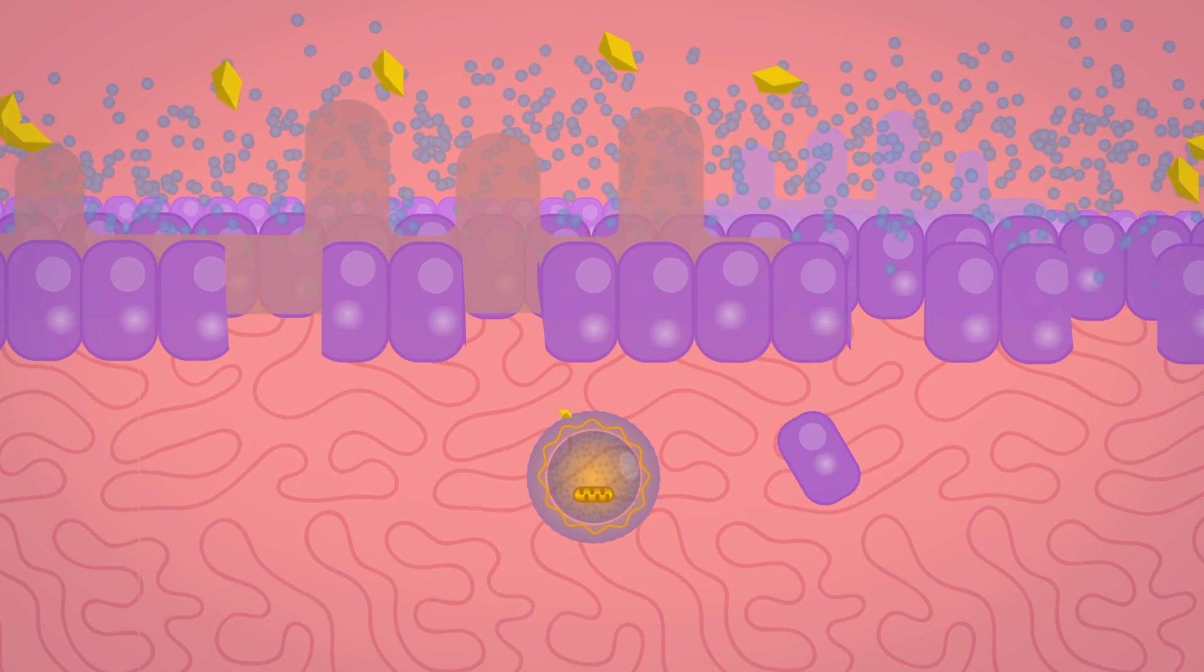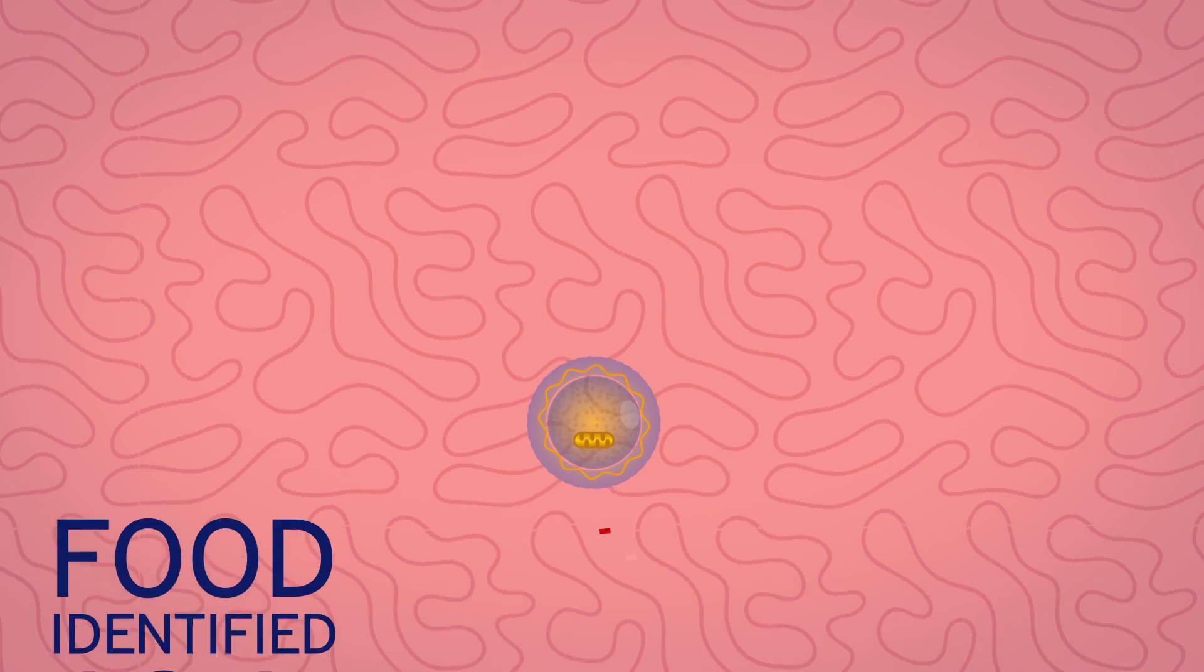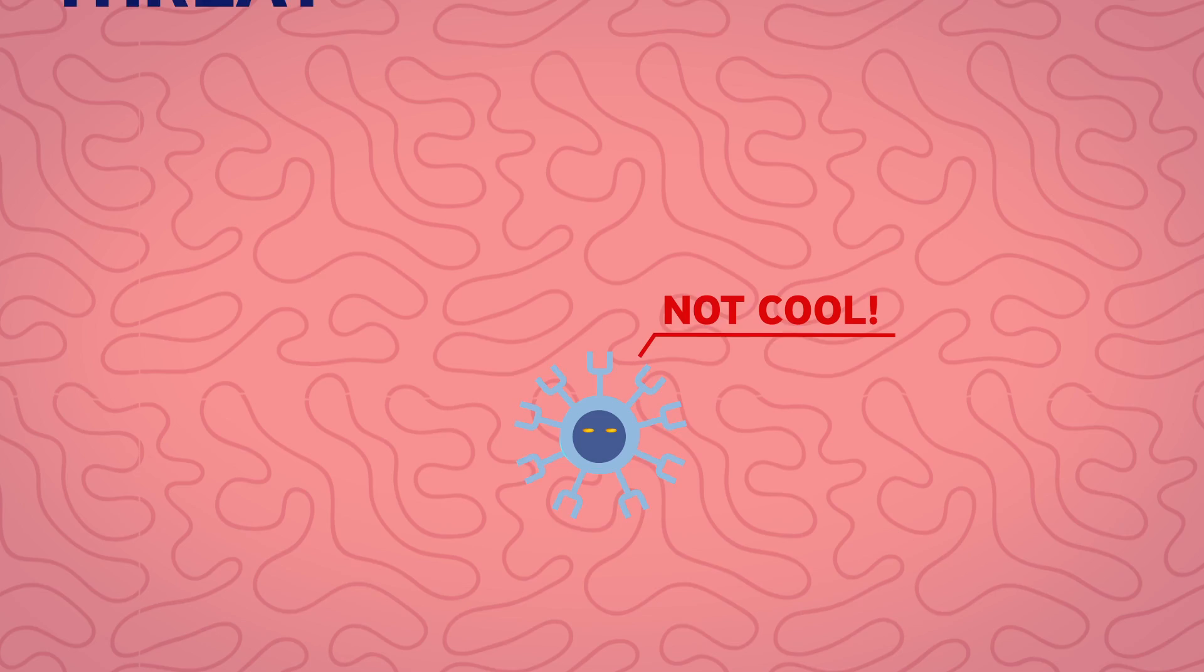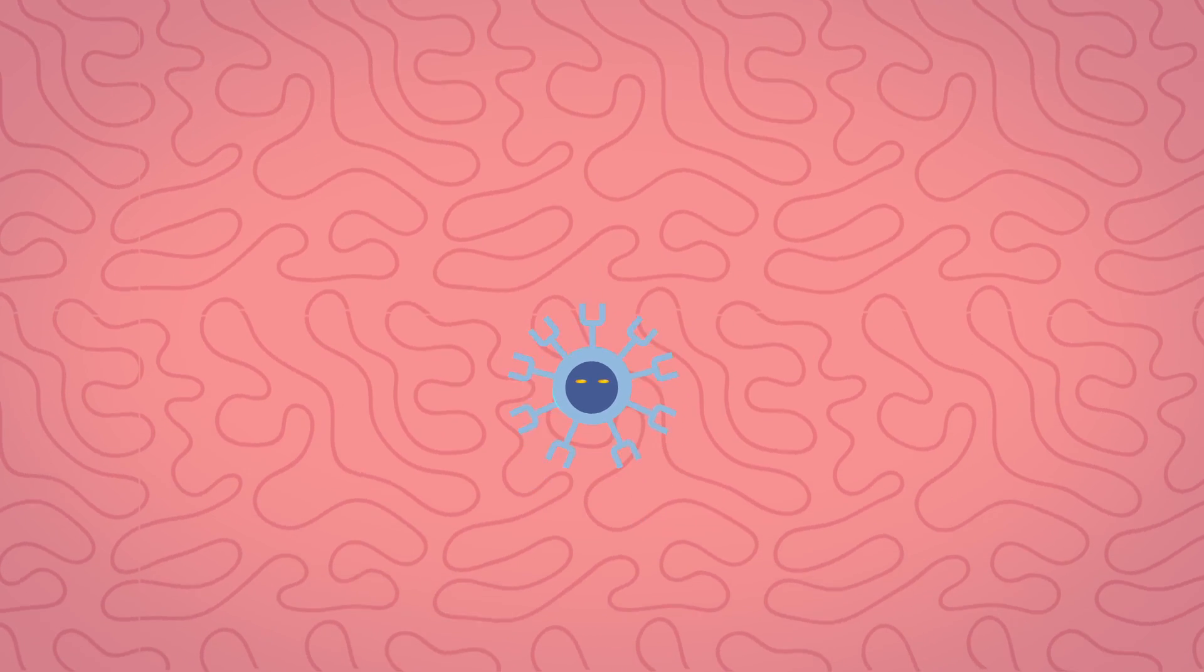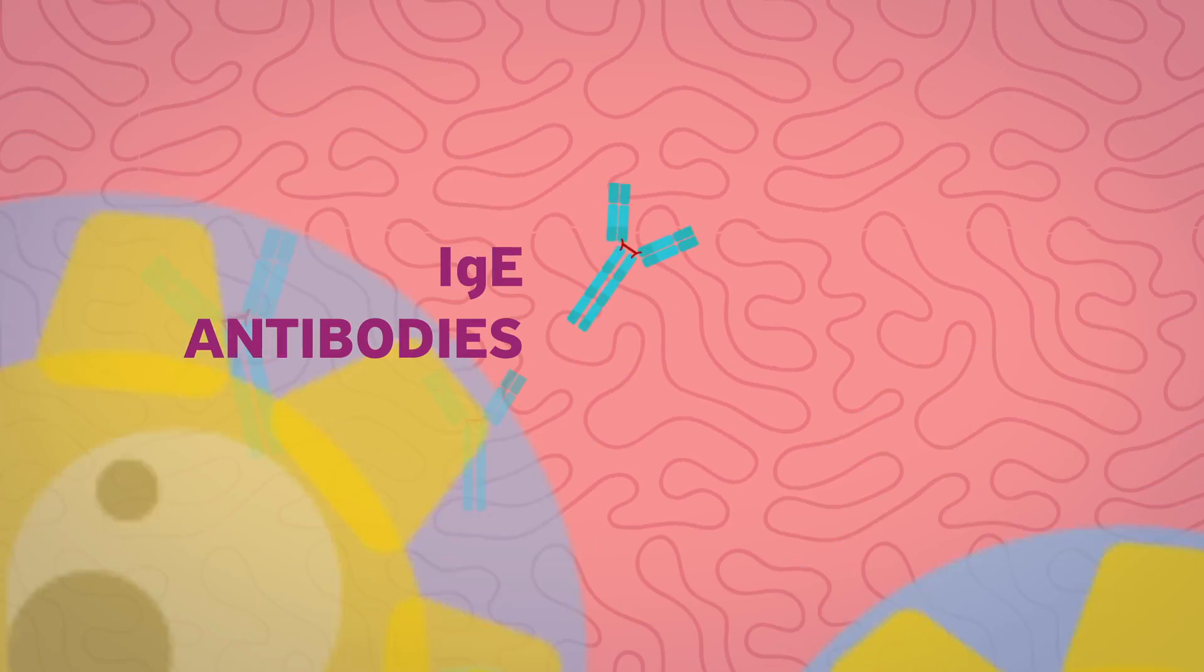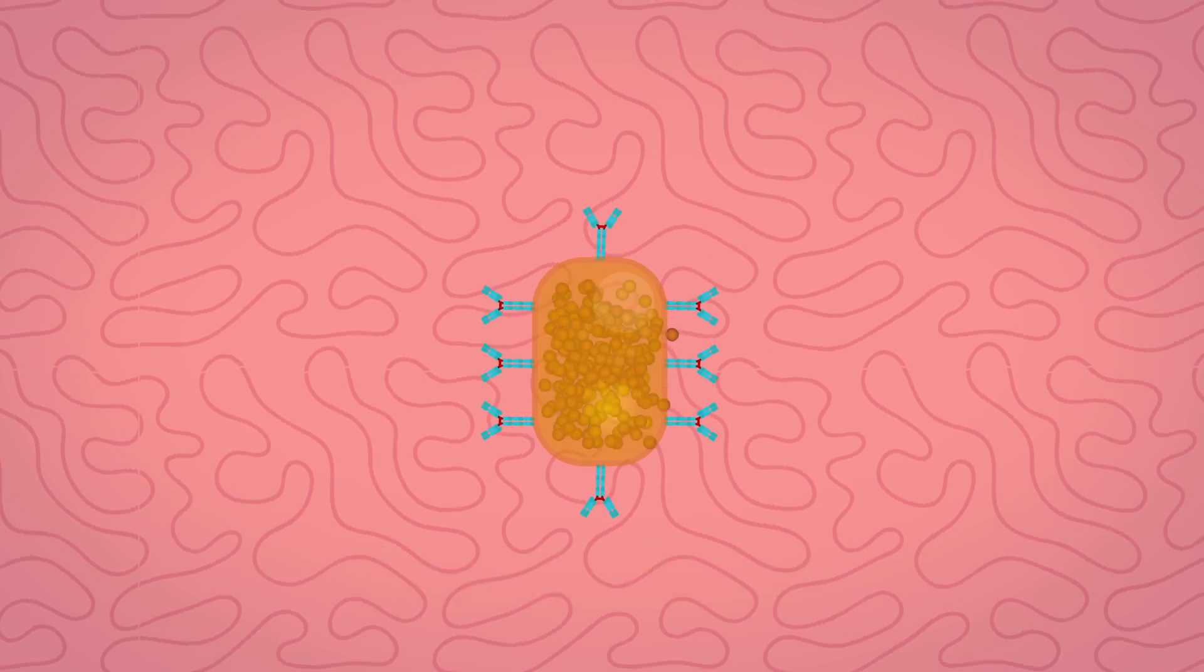Once allergens have traveled across the leaky barrier, the dendritic cells identify these as a threat, alerting the T-cells which become warrior T-cells. They inform the factories of our immune defense, the B-cells, to start producing weapons called IgE antibodies, which arm the mast cells. This is called sensitization.